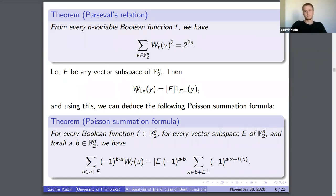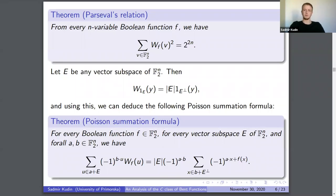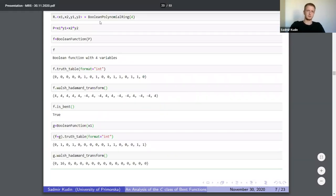You can prove the quantum formula by considering the case when your function equals the characteristic function of a subspace E. Plugging this into the definition, you compute that the Walsh transform in that case will be the cardinality of your subspace times the characteristic function of the orthogonal complement of E, where the orthogonal complement uses the standard dot product.